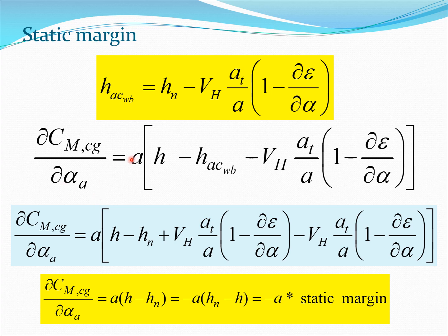I now take the HACWB definition and plug it back into the derivative of CMCG with respect to alpha-A. Starting with the derivative equation, I substitute HACWB from the neutral point relation. Expanding this out, the HACWB becomes a minus HN and the VH·AT/A term cancels, giving a very compact expression: the derivative of CMCG with respect to alpha-A equals A times (H minus HN), or equivalently, minus A times (HN minus H). Since HN minus H is the static margin, this equals minus A times the static margin.